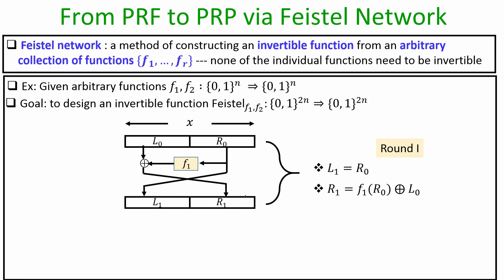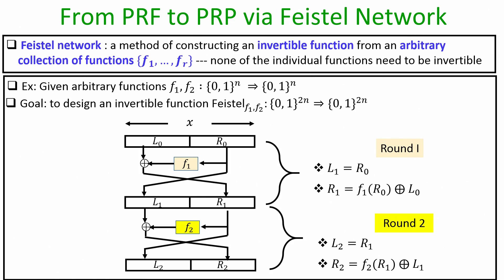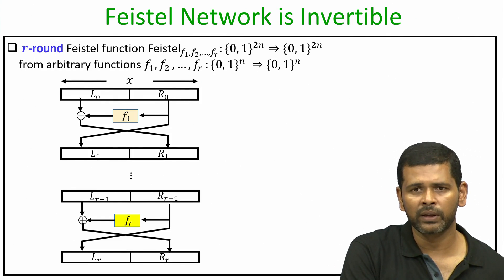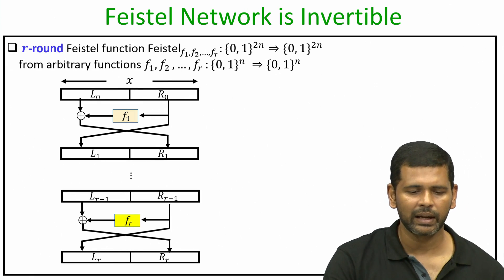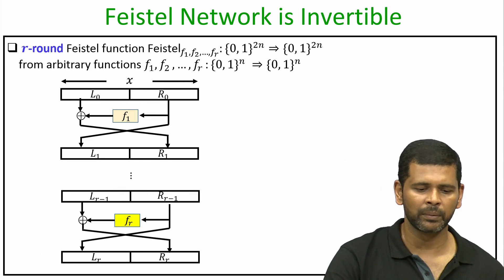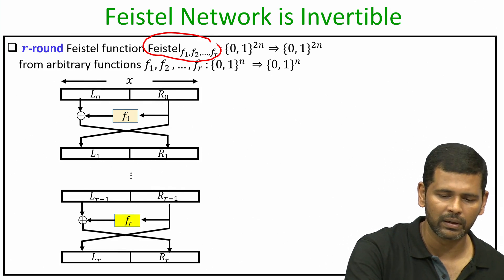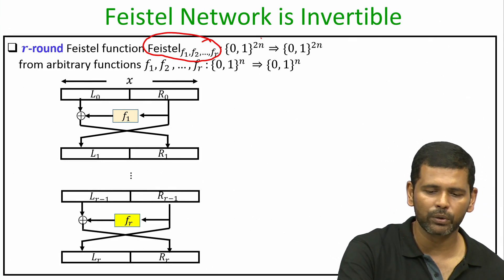Once we obtain the intermediate output L1∥R1, we apply the same principle in round 2 using the second function: L2 = R1 and R2 = F2(R1) ⊕ L1. That is how the composed function Feistel_{F1,F2} works. In general, given R arbitrary functions F1, F2, ..., FR mapping n-bit strings to n-bit strings, we can compose them sequentially R times using this logic, obtaining a Feistel function mapping 2n-bit strings to 2n-bit strings.